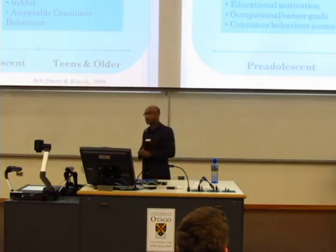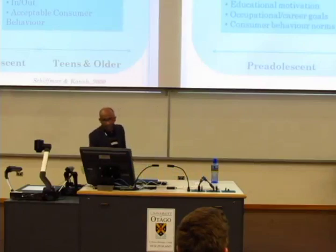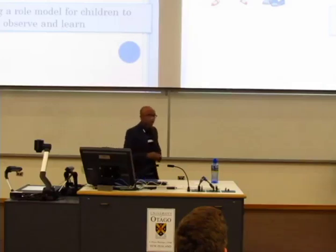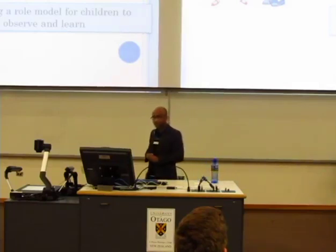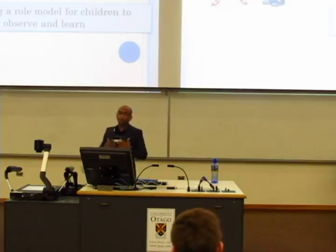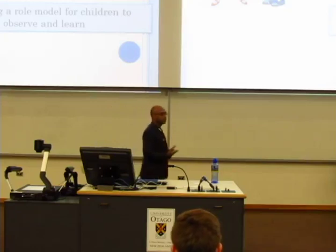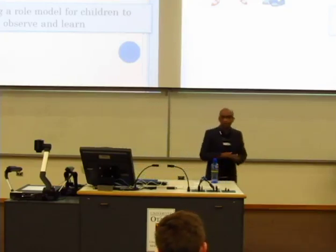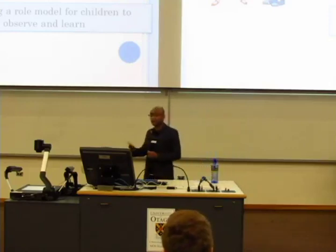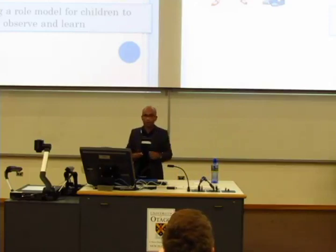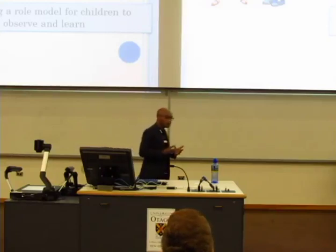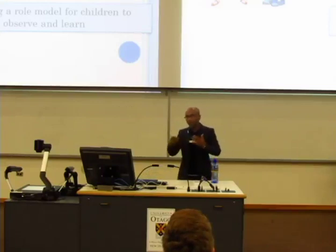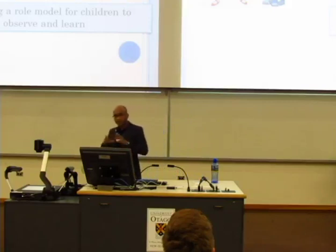Why are parents important in the process of consumer socialization? There are three things. One thing is parents directly influence your views, perceptions, and things like this. At the same time, they provide role models which children can observe and learn — we learn what are the acceptable brands and other things we should do by observing our parents, how they consume and how they use things. Also, family or parents play an important role by controlling how much exposure children get to other socialization agents, like friends and salespeople. This is why parents play an important role in the consumer socialization process.